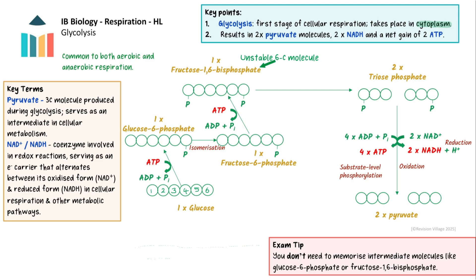So at the end of glycolysis we have two molecules of pyruvate, two molecules of reduced NADH, and a net gain of two ATP, because two ATP were used at the start and four were produced later. It is important to remember for IB biology that you do not need to know the names of the intermediates glucose 6-phosphate or fructose 1,6-bisphosphate. All you need to know is that glycolysis starts with glucose and ends with two pyruvate molecules, two reduced NADH, and a net gain of two ATP.